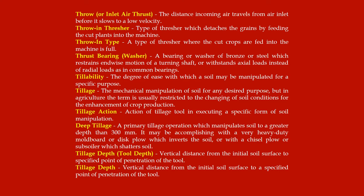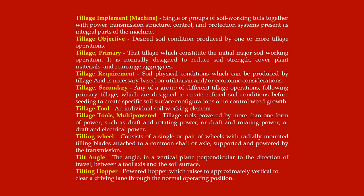Tillage depth: the vertical distance from the initial soil surface to a specified point of penetration of the tool. Tillage implement: a single or group of soil-working tools together with power transmission, structure, control, and protection systems present as integral parts of the machine. Tillage objective: the desired soil condition produced by one or more tillage operations. Tillage primary: that tillage which constitutes the initial major soil-working operation, normally designed to reduce soil strength, cover plant materials, and rearrange aggregates. Tillage requirement: soil physical conditions which can be produced by tillage and are necessary based on utilitarian and/or economic considerations.